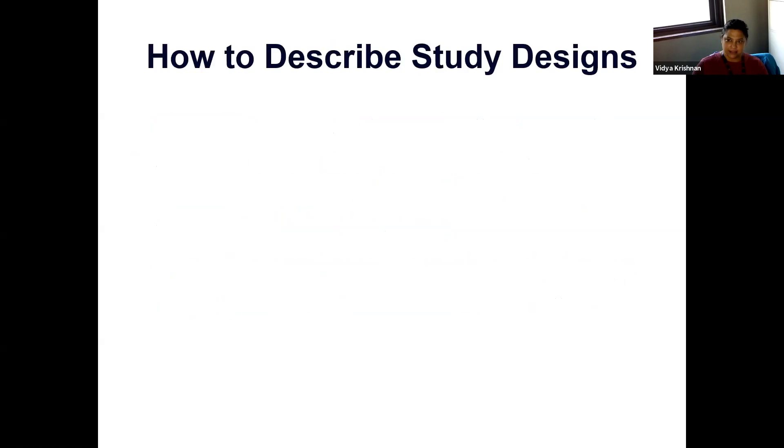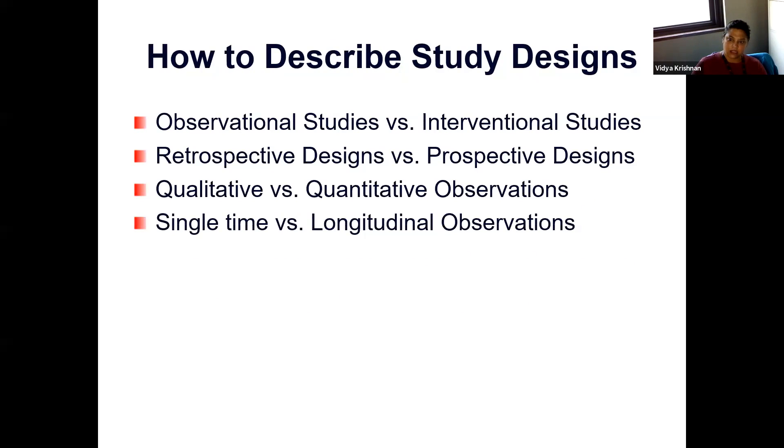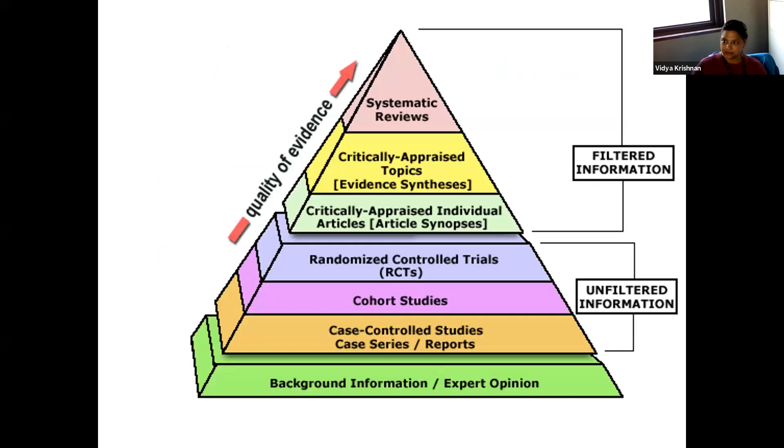So there's many ways to describe different study designs. We can look at them as observational versus interventional. You can look at retrospective designs versus prospective. Qualitative versus quantitative observations. Have a single cross-sectional point of time versus longitudinal observations, which give us some compass on incidents and time and rates. Primary versus secondary data analyses.